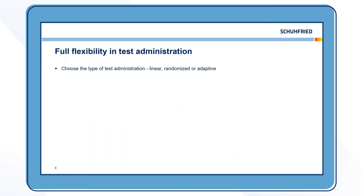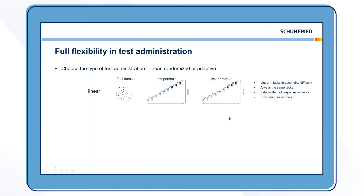As far as test administration is concerned, you have full flexibility with BMT. You can choose between three different types of test administration: linear, randomized, and adaptive. With linear tests, you usually have a small pool of test items, and each item is presented in ascending order of difficulty. If you repeat the test with the same or another person, you would get exactly the same test items again, in the same order, independent of the response behavior of the person, and always with a fixed number of items.